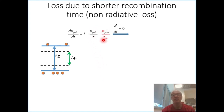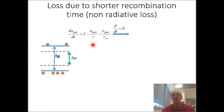The idea is to see how the fact that we have an extra channel of recombination — this non-radiative part — really affects the open circuit voltage by changing the radiative rate through a certain ratio.